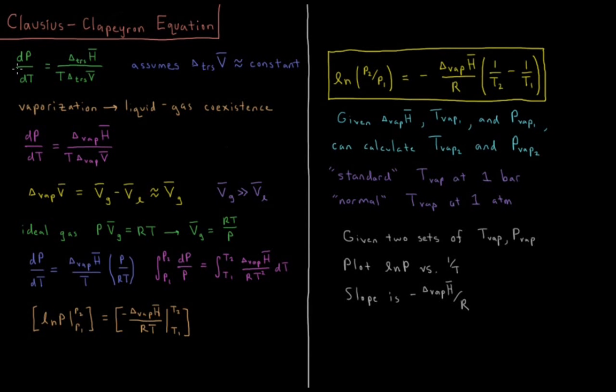So as we change the temperature or pressure, the other one must respond correspondingly to keep the phases in equilibrium. The derivative of the pressure of that coexistence curve with respect to the temperature of that coexistence curve